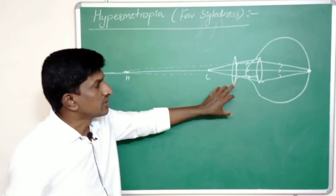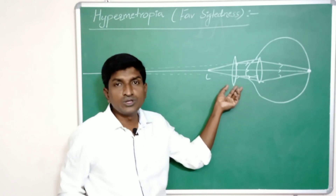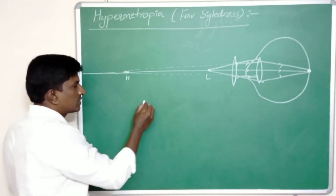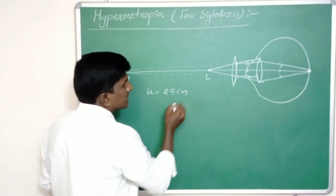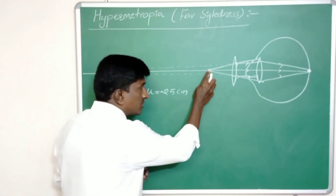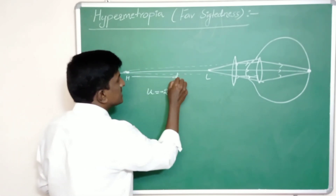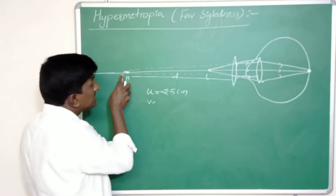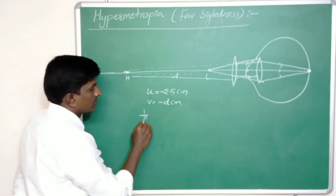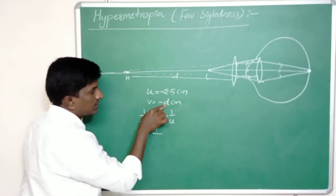By using a biconvex lens we correct hypermetropia. To find the focal length of the biconvex lens: the object is at the least distance of distinct vision, L, which is 25 centimeters. This value is negative, minus 25 cm, as it is opposite to the incident light ray. The image should be formed at H or outside H, at distance d from the lens, so the image distance is minus d centimeters.